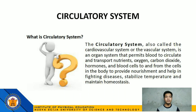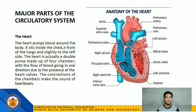Let's now proceed to the circulatory system. The circulatory system, also called the cardiovascular system or the vascular system, is an organ system that permits blood to circulate and transport nutrients, oxygen, carbon dioxide, hormones, and blood cells to and from the cells in the body to provide nourishment, help in fighting diseases, stabilize temperature, and maintain homeostasis. The major parts of the circulatory system: first, the heart, which pumps blood around the body. It sits inside the chest, in front of the lungs and slightly to the left side. The heart is a double pump made up of four chambers, with blood flow going in one direction due to the presence of heart valves. The contractions of the chambers make the sound of heartbeats.